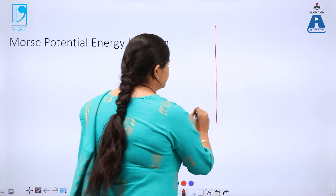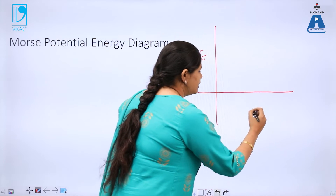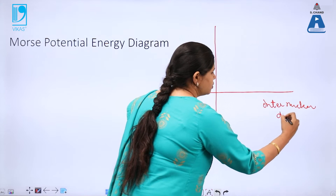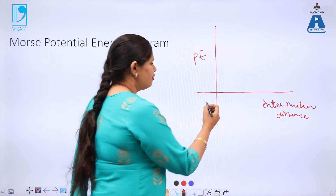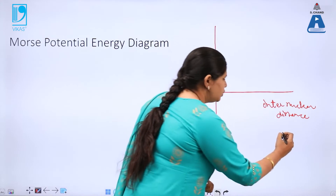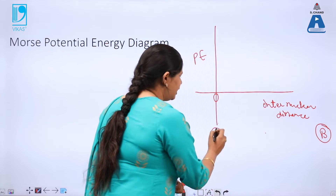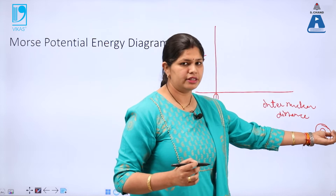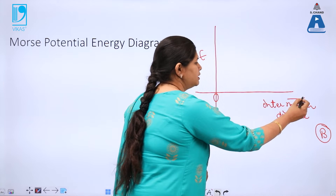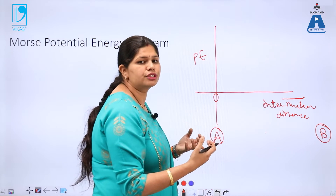According to the Morse potential energy diagram, if I have potential energy on the y-axis and internuclear distance on the x-axis, I assume that two atoms A and B are initially at infinite distance from one another — A at the origin and B at infinite distance. When B approaches A, the potential energy of the system starts to appear in the diagram as attractive forces begin to play a role.